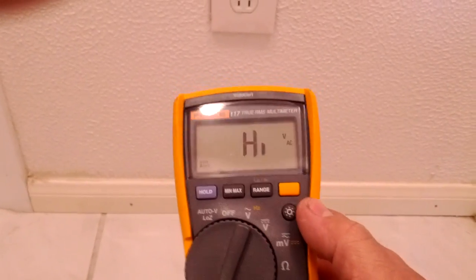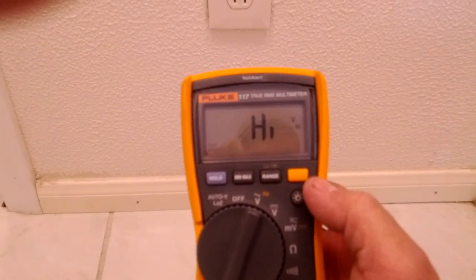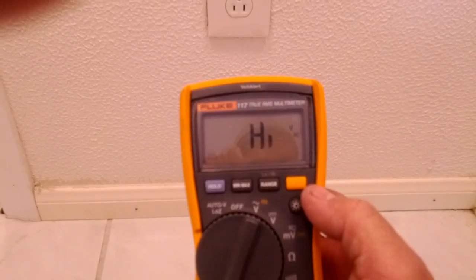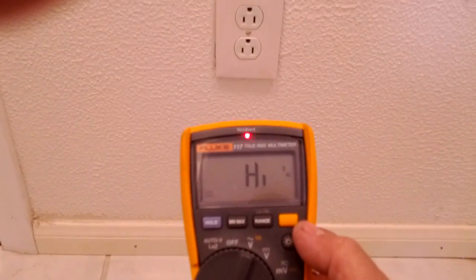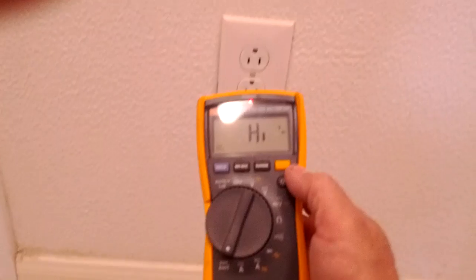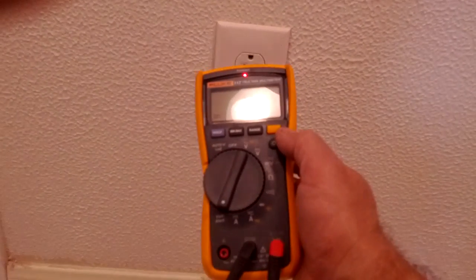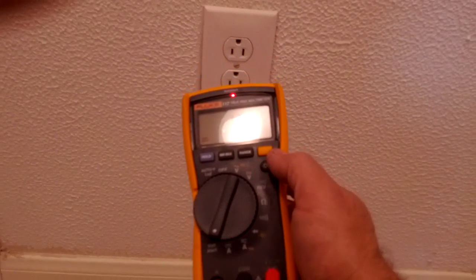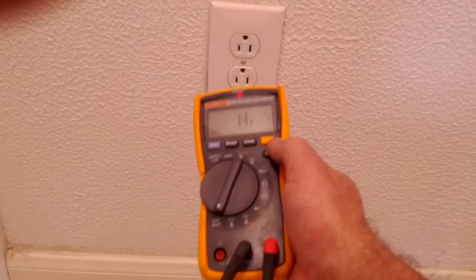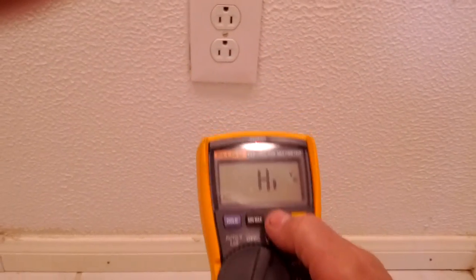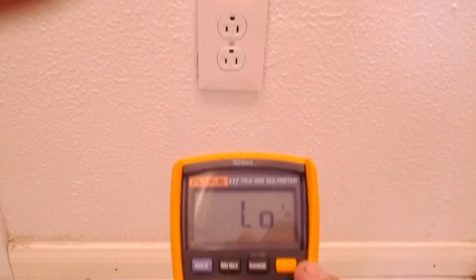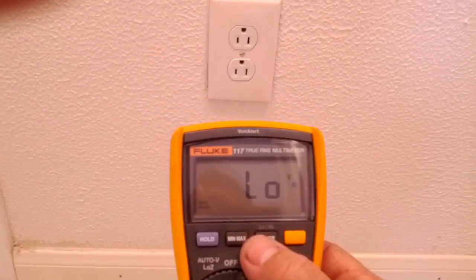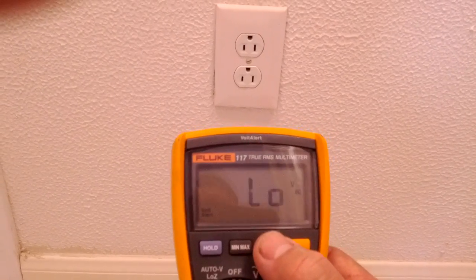You can see how sensitive it can be under the high setting. The beeping is indicating that there is some power. As it gets closer to the receptacle, it shows you that there is some power running through that. Now if I hit the range to the low, it has a range button on the meter that gives you high and low.